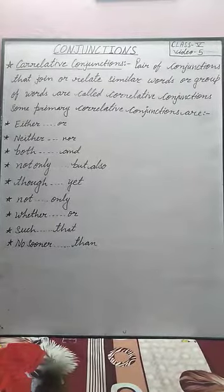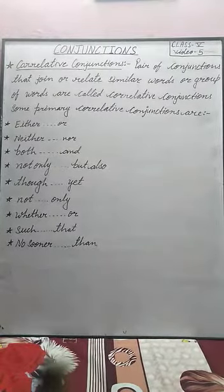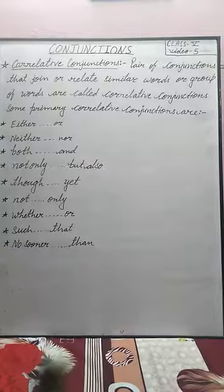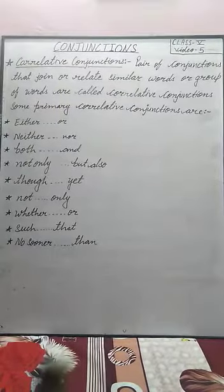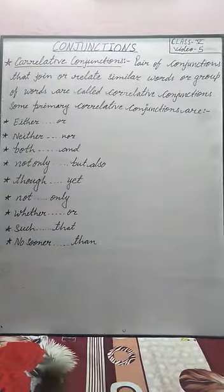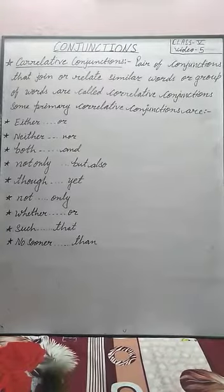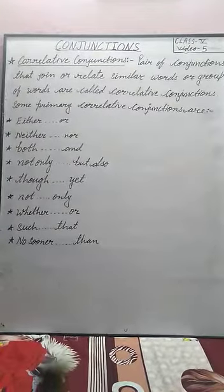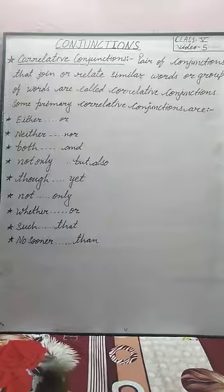Hello students, welcome to the online English grammar class. In our previous classes, we learned about the conjunctions and its two types: coordinating conjunctions and subordinating conjunctions.